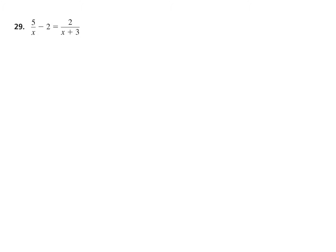All right, last one. This one does not look interesting at all. Let's rewrite it over here in the center, put it all in rational form, and bracket that — it's always a good idea. Now let's pause and identify the LCD. It is X times quantity X plus 3.